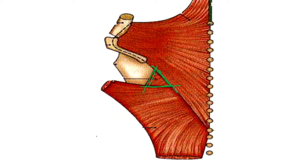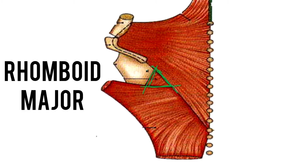The floor of the triangle is formed by the sixth and the seventh rib, the sixth intercostal space, and the rhomboid major muscle. This muscle in red color which is seen here is the rhomboid major muscle.